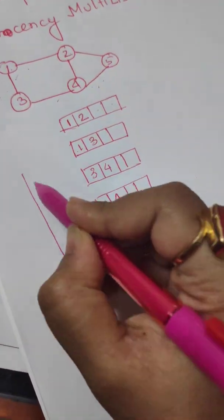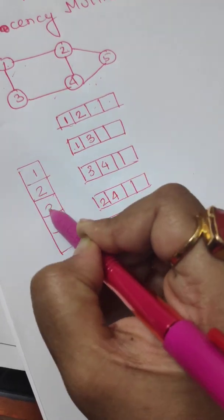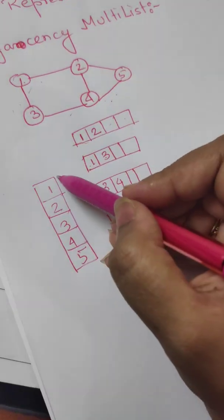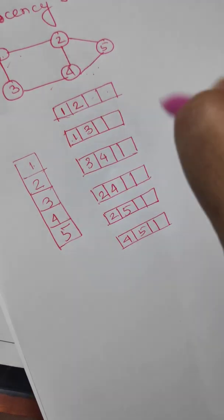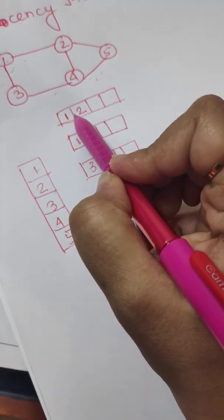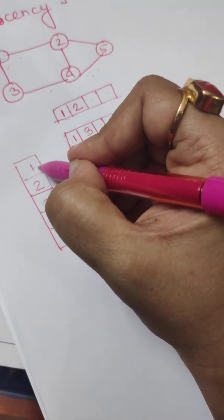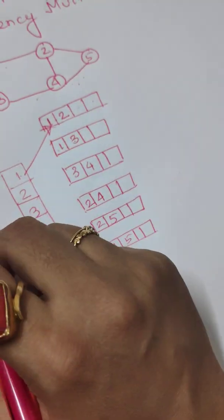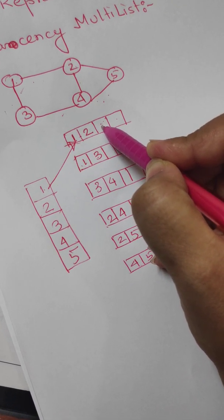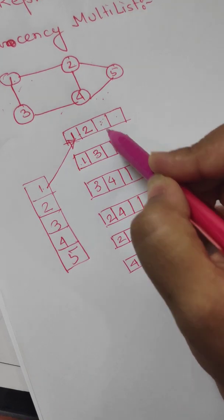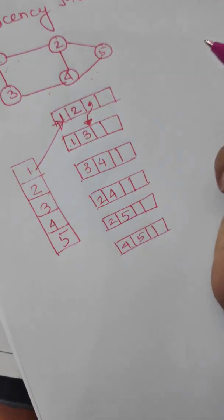Now we will have a list of vertices in the graph: one, two, three, four, five. For the first vertex, we find the first edge that has one as an entry. This is the first edge that has one as an entry, so this vertex in the list will point at this particular edge. This will then point at the next edge that has one as an entry, so this edge has one as an entry and will be pointed to here.